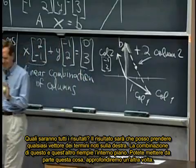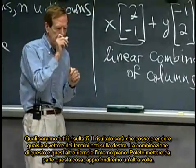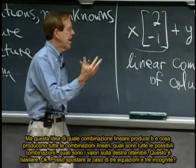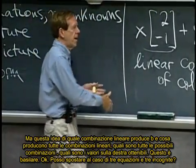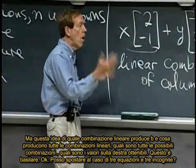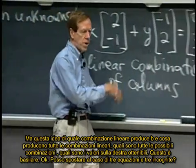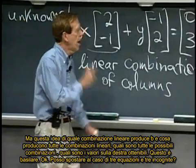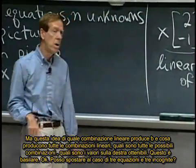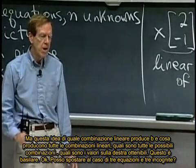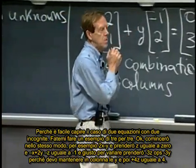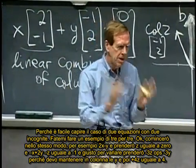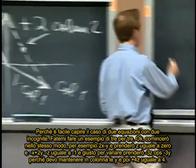You can tuck that away, we'll explore it further. But this idea of what linear combination gives b and what do all the linear combinations give, what are all the possible achievable right hand sides b, that's going to be basic. Can I move to three equations and three unknowns? Because it's easy to picture the two by two case. Let me do a three by three example.